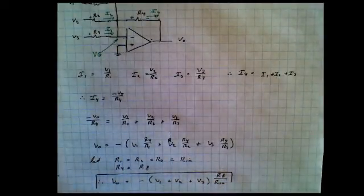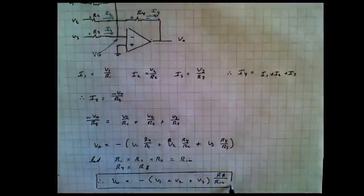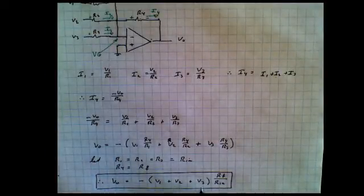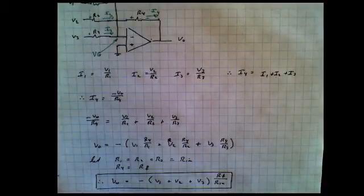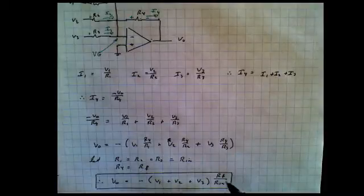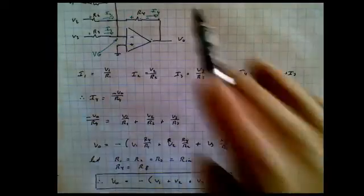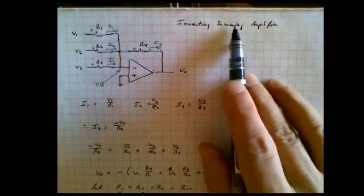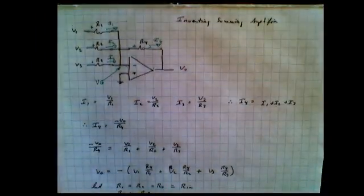Notice what we have, we have an output voltage equal to the sum of the individual voltages times some kind of a gain here. And of course we could make the gain equal to one if we wanted to. And so that's why this is called an inverting summer. Because it sums or adds the inputs and then it inverts the polarity.